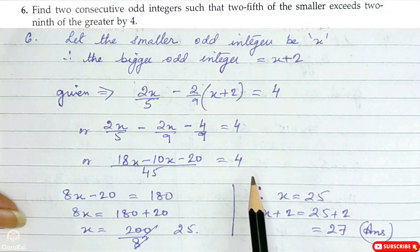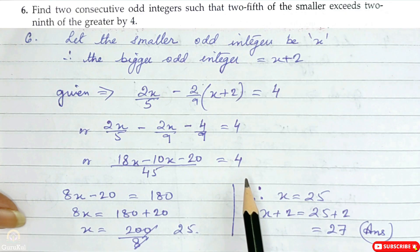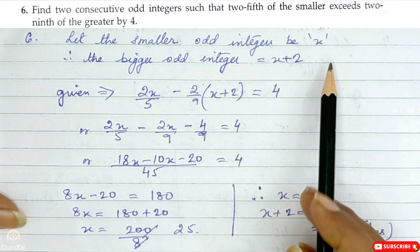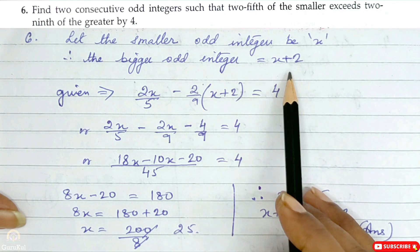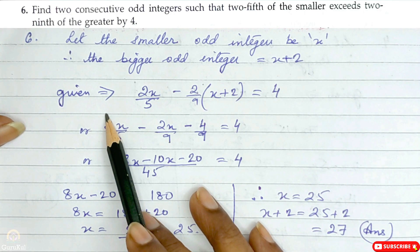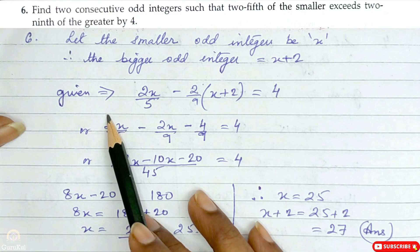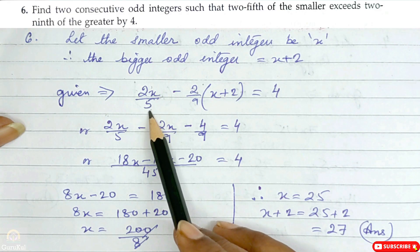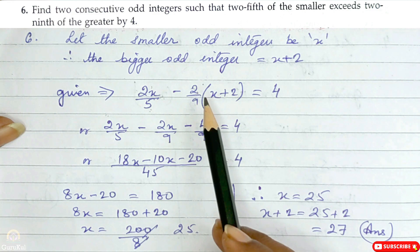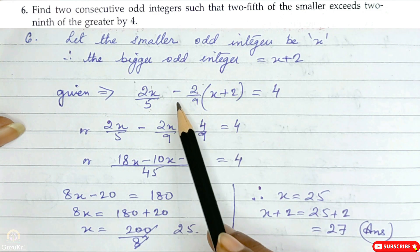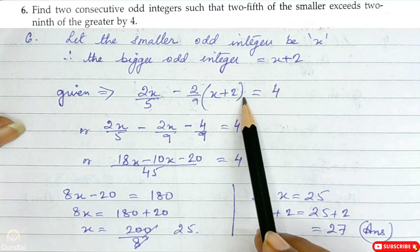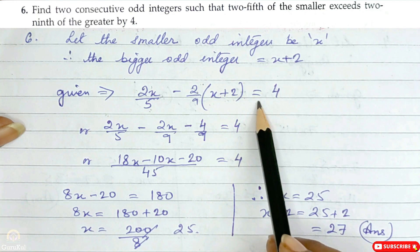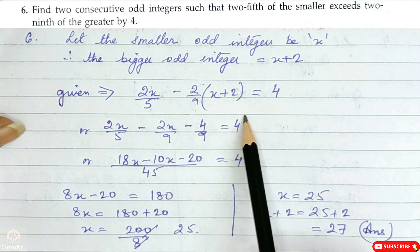Question number 6: Find 2 consecutive odd integers such that 2/5 of the smaller exceeds 2/9 of the greater by 4. Let the smaller odd integer be x; therefore the bigger odd integer will be x plus 2. 2/5 of x exceeds 2/9 of (x plus 2) by 4. This is the equation we have formed.